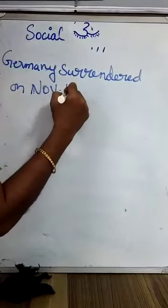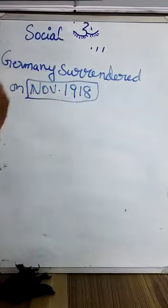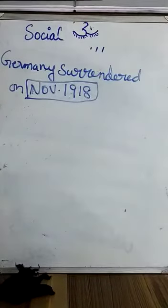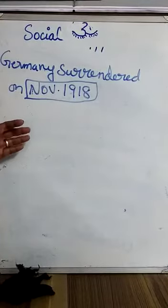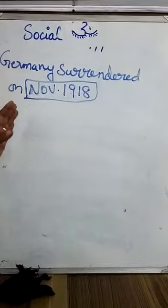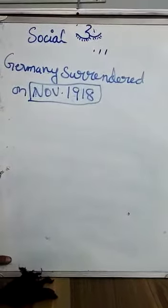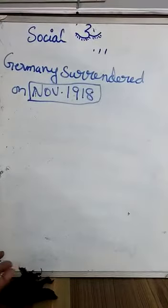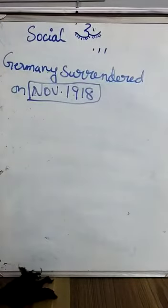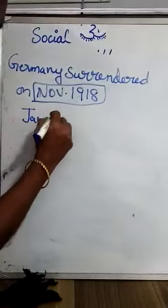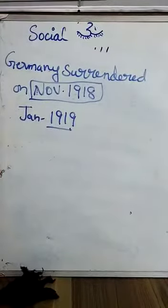Germany surrendered on November 1918. So this came to an end for the First World War in November 1918. This stopped the Kaiser Wilhelm's rule. After this Treaty of Versailles, it stopped the Kaiser Wilhelm's rule and Germany thought to accept this situation. Then they signed in January 1919, which was after two months.